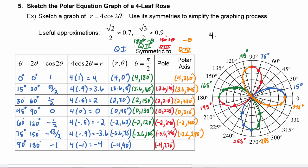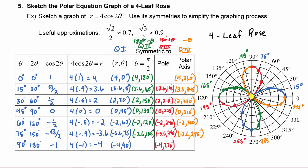This curve is called a four-leaf rose. Looking at it you can see all the symmetries: it has vertical axis symmetry (theta equals pi over two), meaning it folds over itself; pole symmetry, meaning any point through the pole an equal distance lands on the graph again; and polar axis symmetry (horizontal axis), meaning folding over the horizontal axis lands right on the graph again.